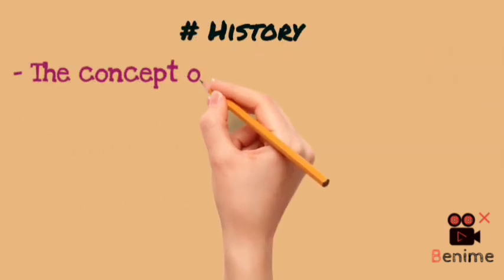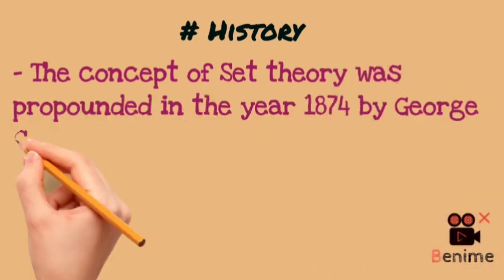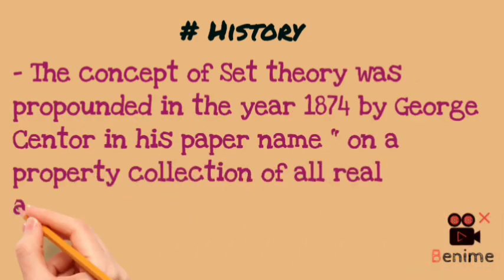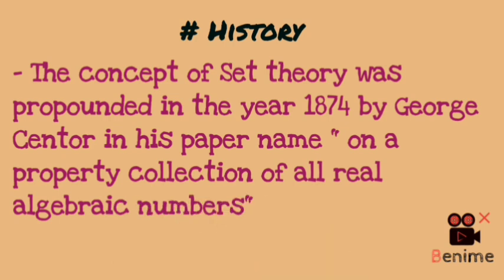Now we will see the history of set theory. In 1874, George Cantor stated in his paper that it is the property collection of all real algebraic numbers. After this concept, mathematicians also used it — like Klein's Encyclopedia or Russell's Paradox. So set theory is the basic foundation if we want to understand topology, abstract algebra, or discrete mathematics.